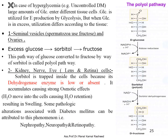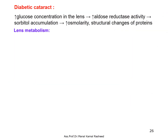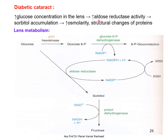Diabetic complications from sorbitol accumulation include nephropathy, neuropathy, and retinopathy. Diabetes increases glucose concentration in the lens and increases aldose reductase activity, causing sorbitol accumulation and osmotic pressure changes in protein metabolism. In uncontrolled diabetes, aldose reductase converts glucose to sorbitol, which cannot exit certain cells due to absent sorbitol dehydrogenase, leading to cataract formation in the lens and peripheral neuropathy.